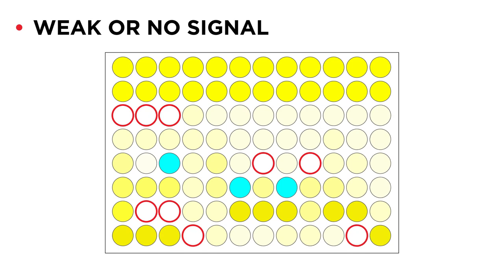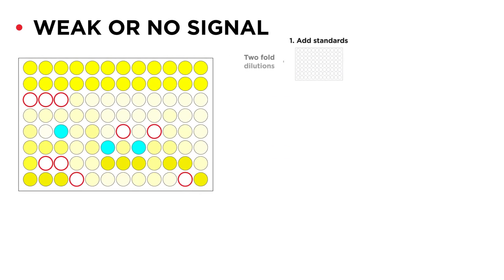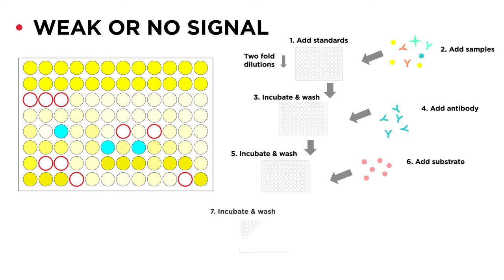Weak or no signal could be a result of an omission of a key reagent or a step. Therefore adding all the reagents in the right order is crucial for a successful ELISA. When you're pipetting many samples manually, a slight change of focus could lead to missing a well or a column of wells resulting in missing signal.